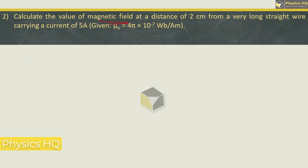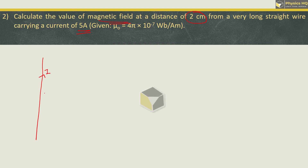Calculate the value of magnetic field at a distance of 2 cm from a very long straight wire carrying a current of 5 ampere. Whenever you have a very long straight wire through which current I is flowing, the magnetic field is produced in circular loops. To find the magnetic field at any distance R, the formula is B = (μ₀ / 4π) × (2I / R), which simplifies to B = μ₀I / (2πR).